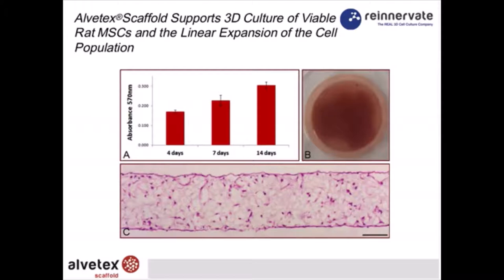More sophisticated techniques can also be used to visualize cells in Alvitex growing in 3D. In panel C, we have an example of histology — a transverse section of an Alvitex mesenchymal stem cell culture. It has been fixed, embedded in paraffin wax, placed onto microscope slides using standard tissue processing, and counterstained with hematoxylin and eosin. The cells are quite evenly distributed throughout the material, and of course the longer you grow this culture, the more concentrated it will become.